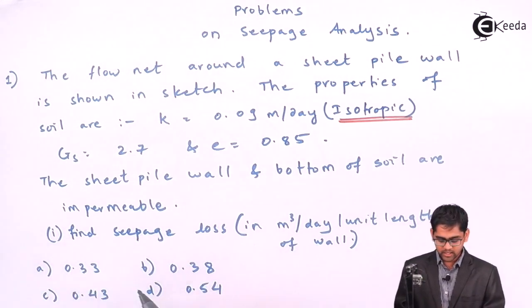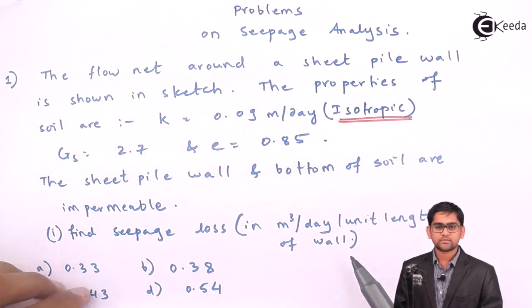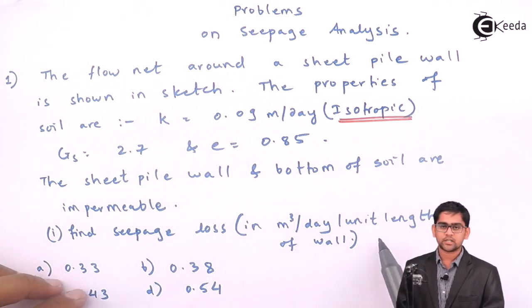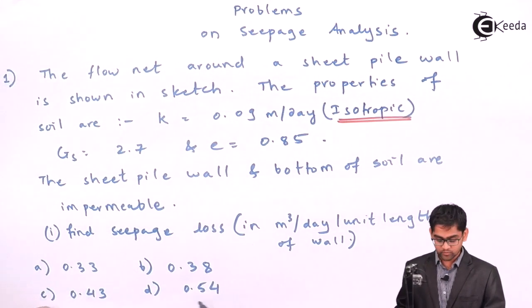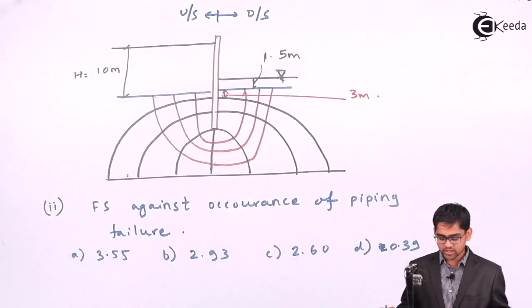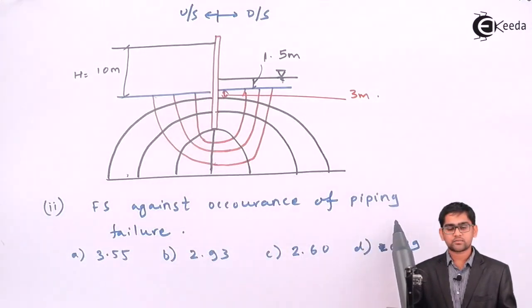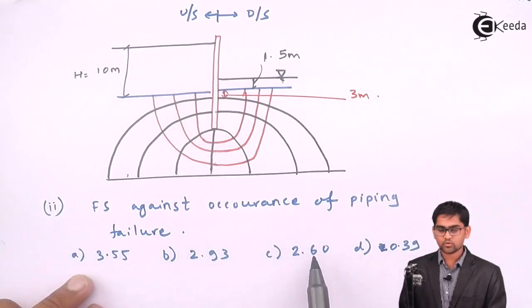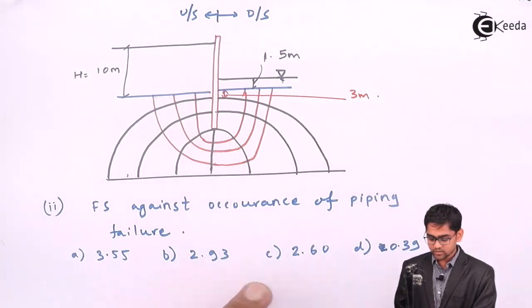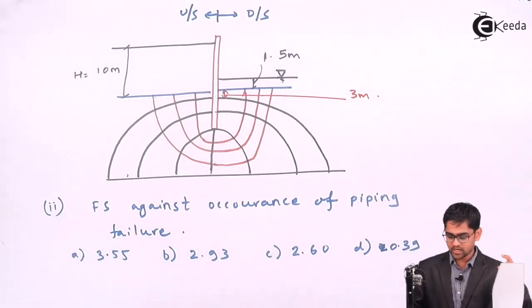The first question asks to find the seepage loss in meter cube per day per unit length of the wall. Options are given: 0.33, 0.38, 0.43, and 0.54. In the second question, the factor of safety against piping failure is asked. The options are given: 3.55, 2.93, 2.6, and 0.39.